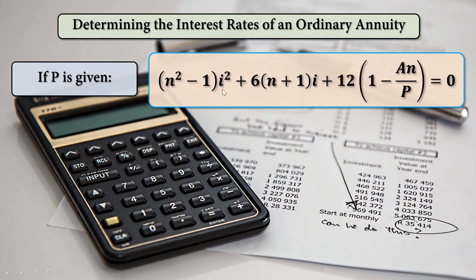And our i is unknown. Therefore, we have no value for this, and later on we are going to use the quadratic formula in solving for i, plus 6 times the quantity of n plus 1 times i plus 12 times the quantity of 1 minus An over P is equal to 0.